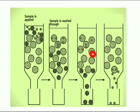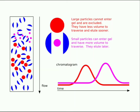Smaller molecules spend more time inside the beds and are therefore eluted later, meaning they are eluted after a larger volume of mobile phase has passed through the column. In summary, large particles cannot enter the gel and are excluded, so they have less volume to traverse and elute sooner.